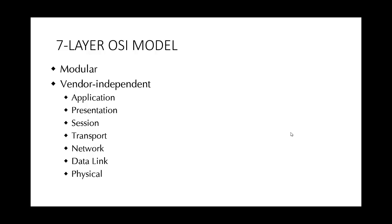The transport layer is responsible for end-to-end connection across a network. The network layer is responsible for specifying network-wide addressing schemes and how data is routed across a network consisting of more than one physical segment. The data link layer relates to protocols concerned with data transfer between two or more directly connected systems. Finally, the physical layer specifies the physical characteristics of transmission channels and the signalling standards used to transfer data across them. This was the tip of the iceberg — we'll go through each layer in more detail shortly.